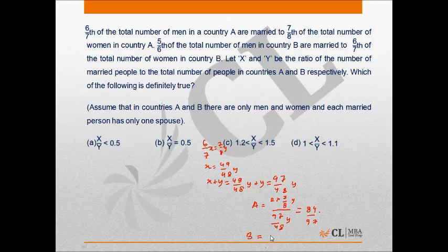Now the question is asking which of the following is definitely true about the ratio of x to y. Now compute ratio of x to y: x upon y will be equal to 84 upon 97 upon 60 upon 71. On simplifying we get this quantity slightly more than one.